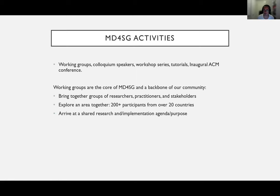The activities we undertake as an organization include working groups on specific areas of research, colloquium speakers, a workshop series, and this year we actually have an inaugural ACM conference. The work from today was born out of a working group — groups of researchers including students, junior faculty, practitioners, and researchers from the social sciences that explore a specific area together, representing individuals from multiple countries. The project today spans a collaboration from multiple countries as well.